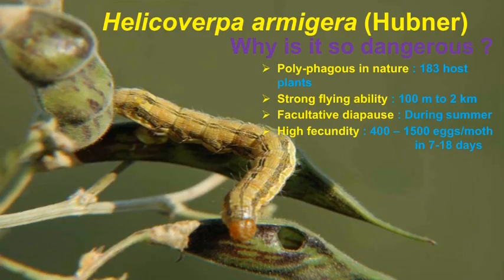Helicoverpa armigera is a polyphagous pest, which makes it so dangerous. There are four major reasons behind this: first, it is polyphagous in nature with nearly 200 hosts; second, strong flying ability of the male and female moth; third, the faculty to diapause during summer conditions; and fourth, high fecundity rate — which is also one of the major reasons why Helicoverpa armigera is so dangerous.